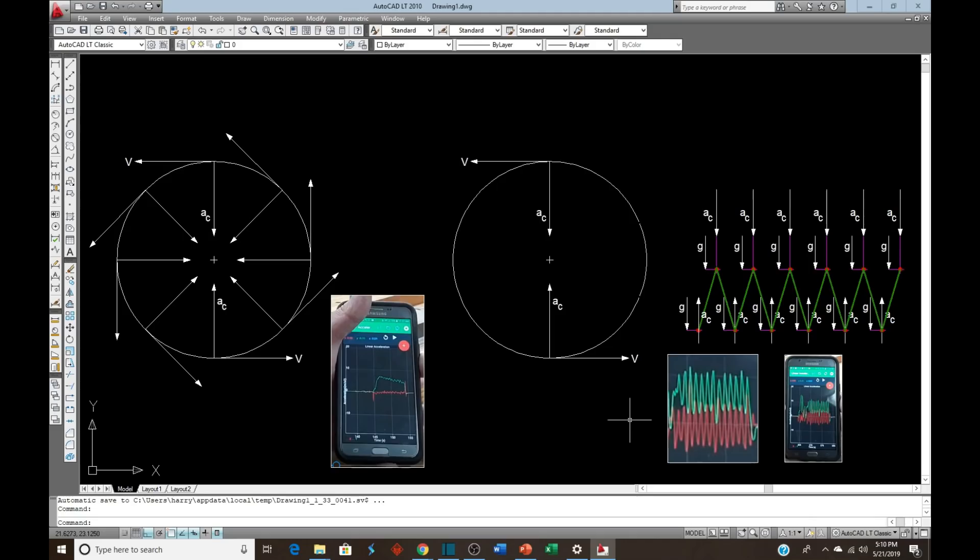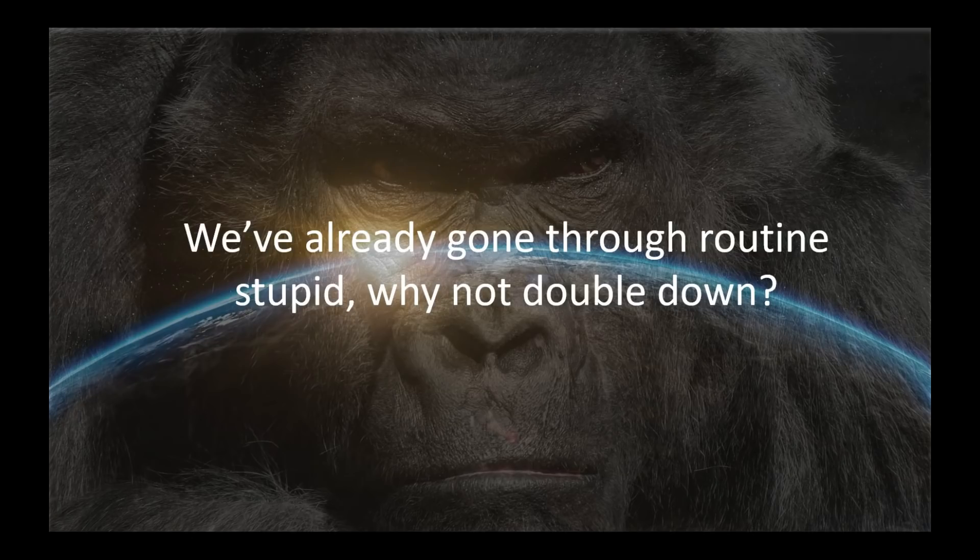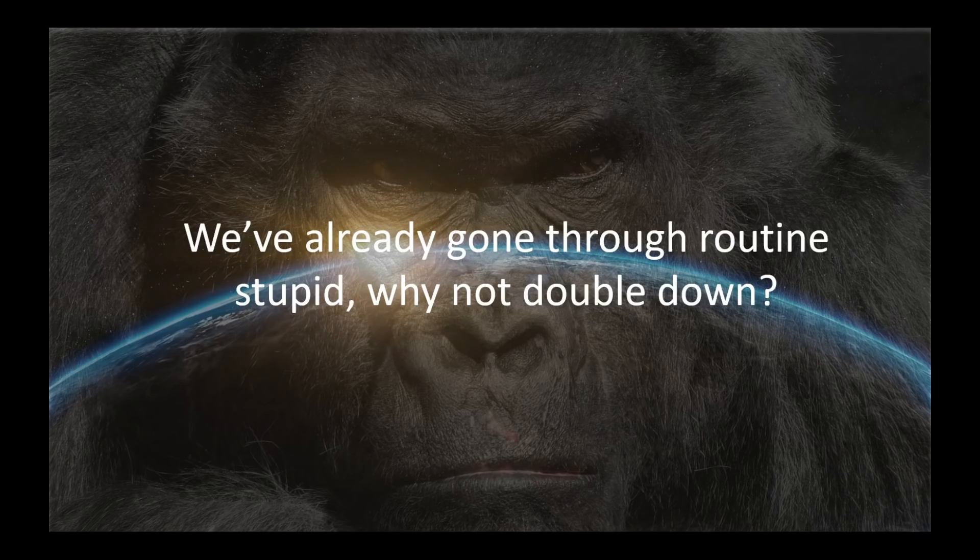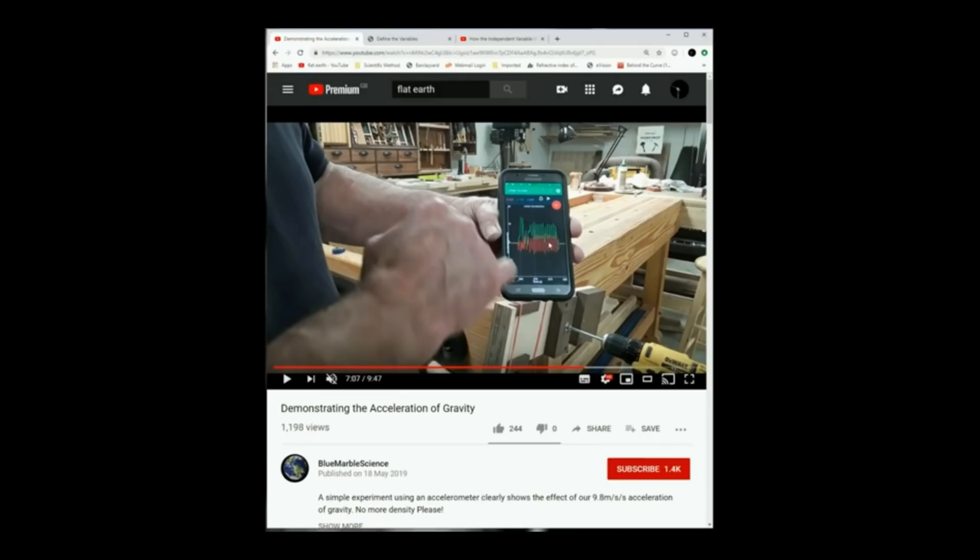Well, since we've already gone through routine stupid, why not double down and see what other kind of crazy crap we can come up with? The problem is, we know by Cavendish's experiment that when Cavendish quantified the effects of gravity, he demonstrated, or he quantified it to be a 50 millionth of the object's weight.